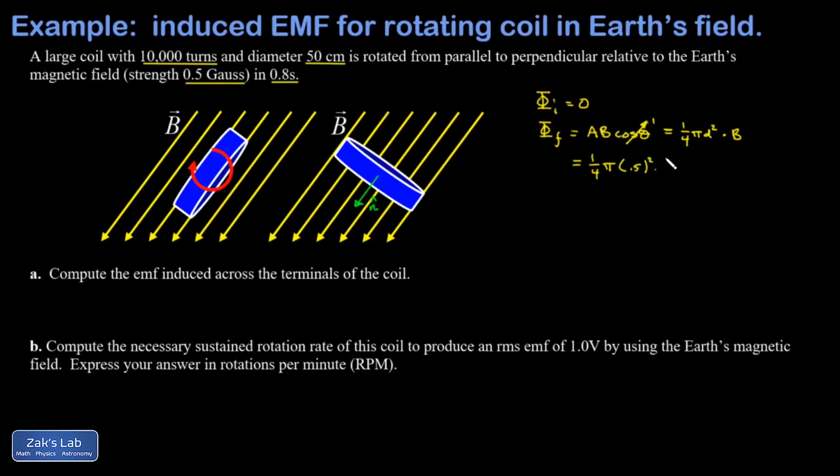This needs to be expressed in tesla, and the conversion is that a gauss is 10⁻⁴ tesla, so we can turn this magnetic field into 5 × 10⁻⁵ tesla. I get a flux per loop of 9.82 × 10⁻⁶ tesla meters squared. Now that I have the change in the flux for this rotation, I can invoke Faraday's law.